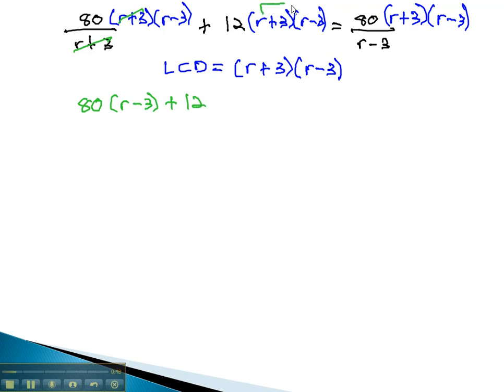Notice these two binomials are a sum and a difference, which means we only need to multiply the first and last together to get r squared minus 9, equals 80, with the r minus 3's dividing out, times r plus 3.